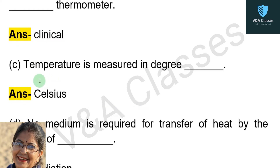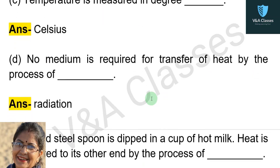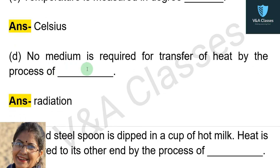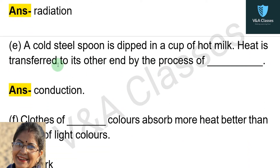Next fill in the blank: temperature is measured in degree — answer: Celsius. Next: no medium is required for transfer of heat by the process of — answer: radiation. Next: a cold steel spoon is dipped in a cup of hot milk; heat is transferred to its other end by the process of — answer: conduction.